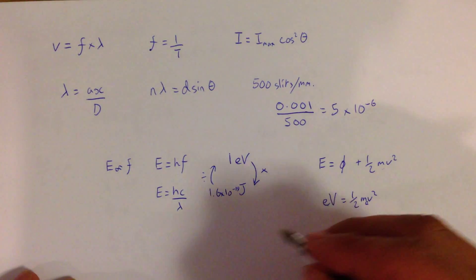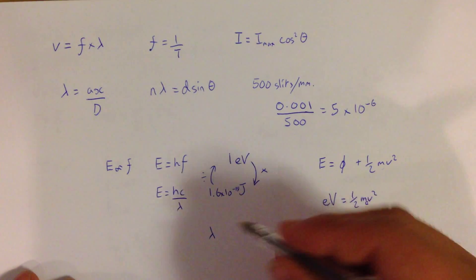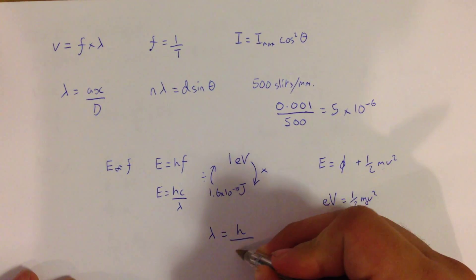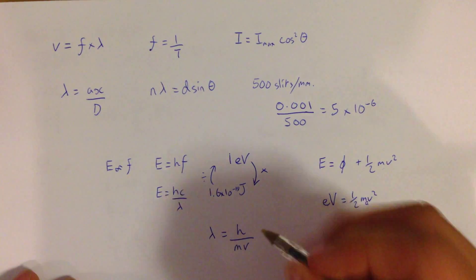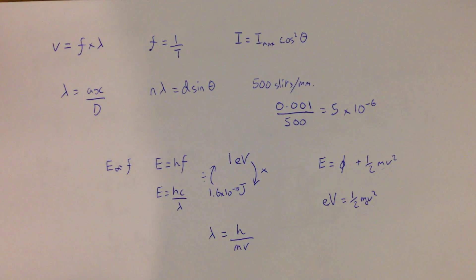We've then got de Broglie's equation, which is that the wavelength is proportional to the momentum, so wavelength of anything is equal to Planck's constant divided by its momentum, so mv. And again, if you've got an electron here, this could be the mass of an electron, so remember that's in your data booklet.